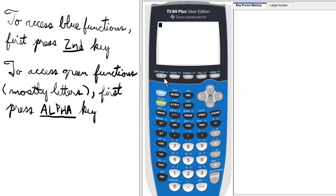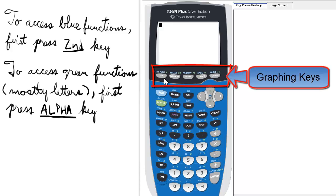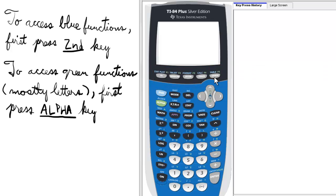The first row of keys on the calculator keyboard are called the graphing keys, and start with the Y equals on the left and go all the way to Graph on the right.